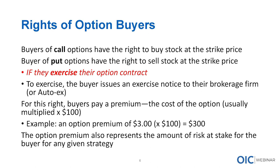That option premium represents the amount of risk at stake for any buyer - you will not lose more than what you pay when you purchase an option. If you purchase one call option for $3 - and one option is equivalent to 100 shares - that's $300 you pay for it, and that's the most you can lose should that option expire worthless. It's also important not to confuse exercising versus buying and selling. You can buy and sell an option throughout the life of a contract. Equity options are considered American-style options, and there is possibility to exercise them prior to expiration.